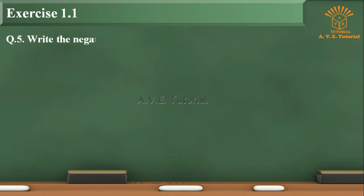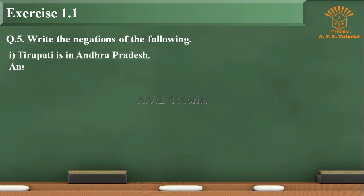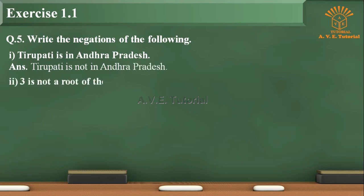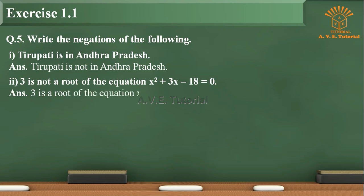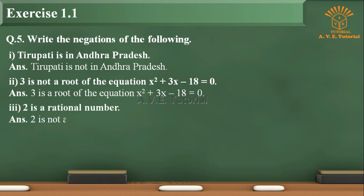Question 5: Write the negations of the following. 1. Thirupati is in Andhra Pradesh. Answer: Thirupati is not in Andhra Pradesh. 2. 3 is not a root of the equation x² + 3x − 18 = 0. Answer: 3 is a root of the equation x² + 3x − 18 = 0. 3. 2 is a rational number. Answer: 2 is not a rational number.